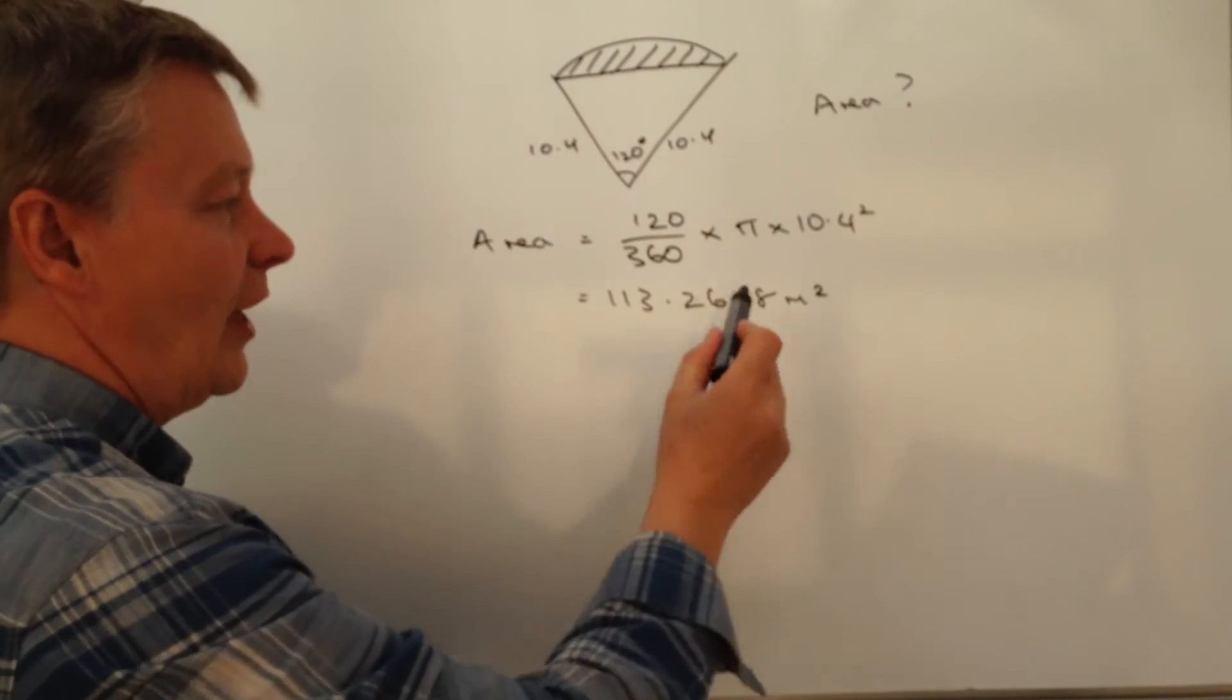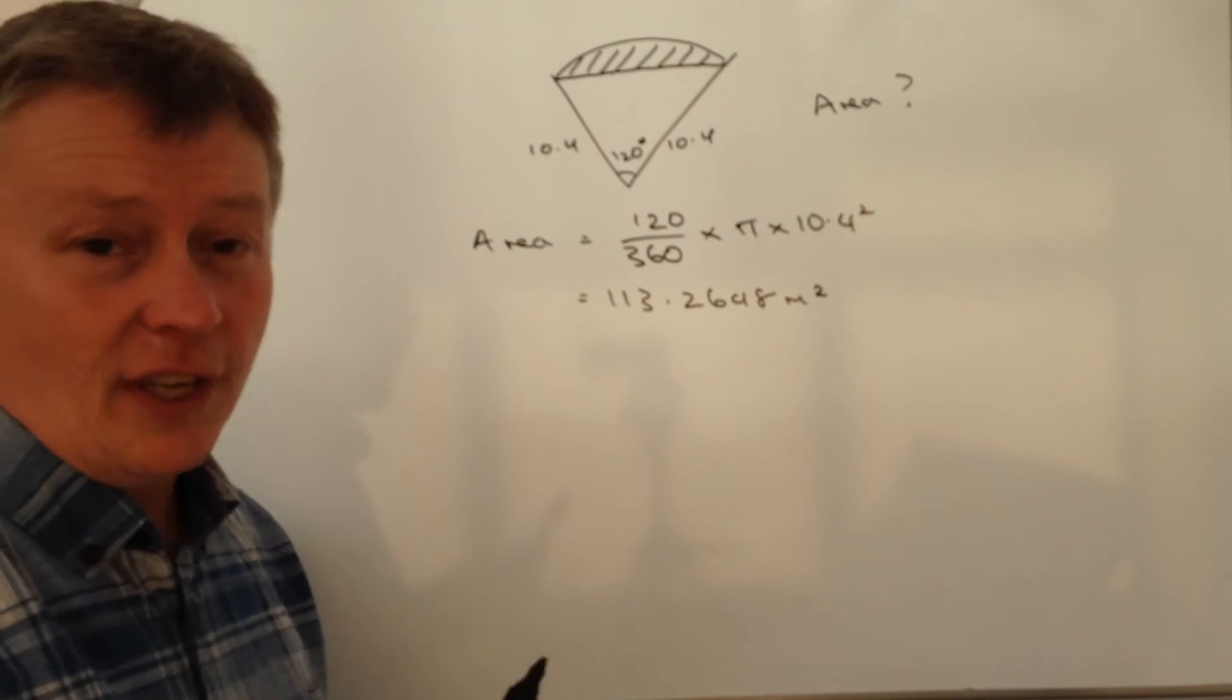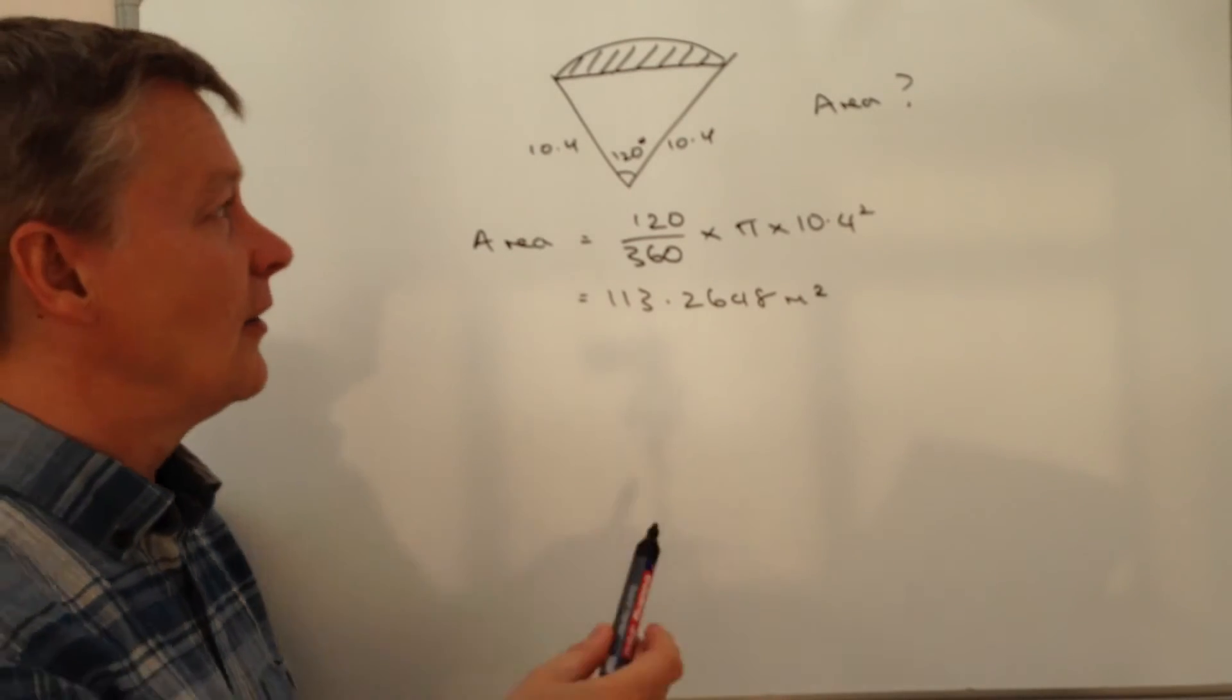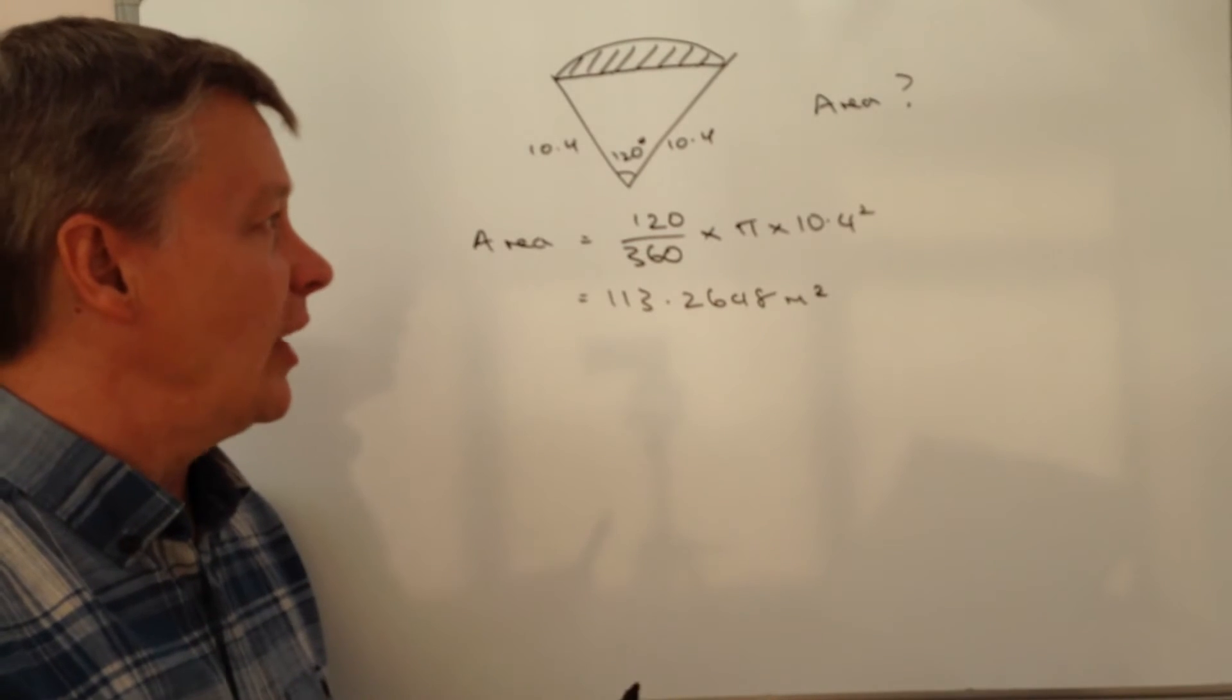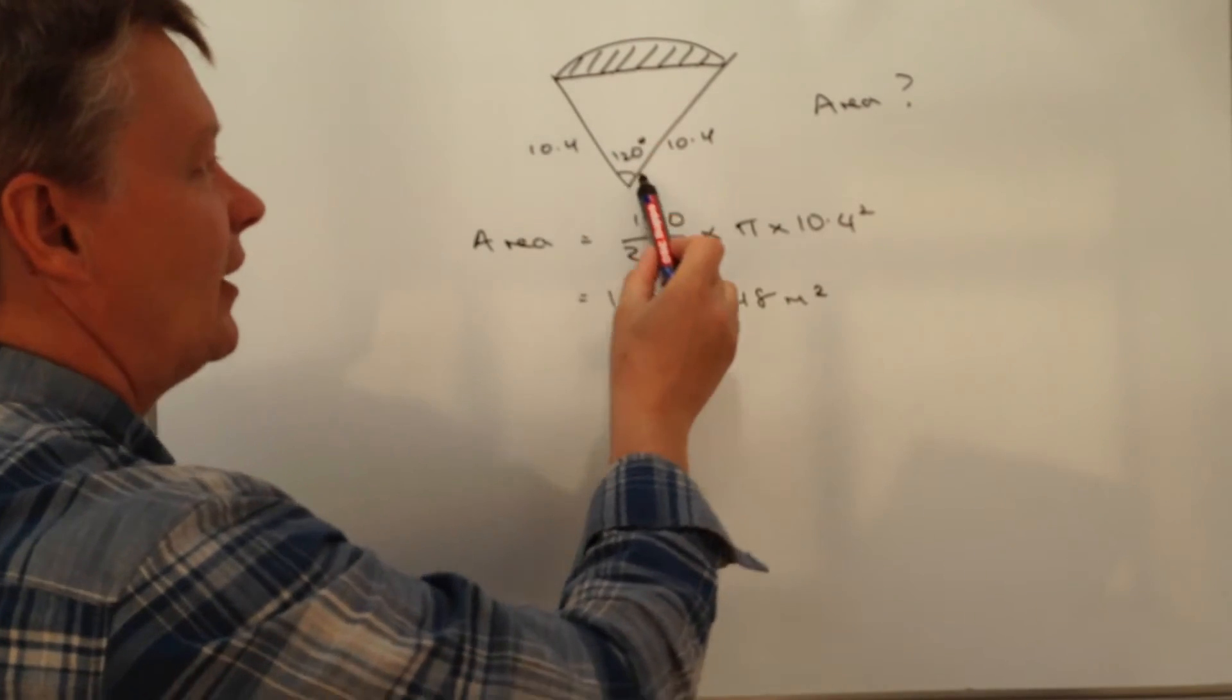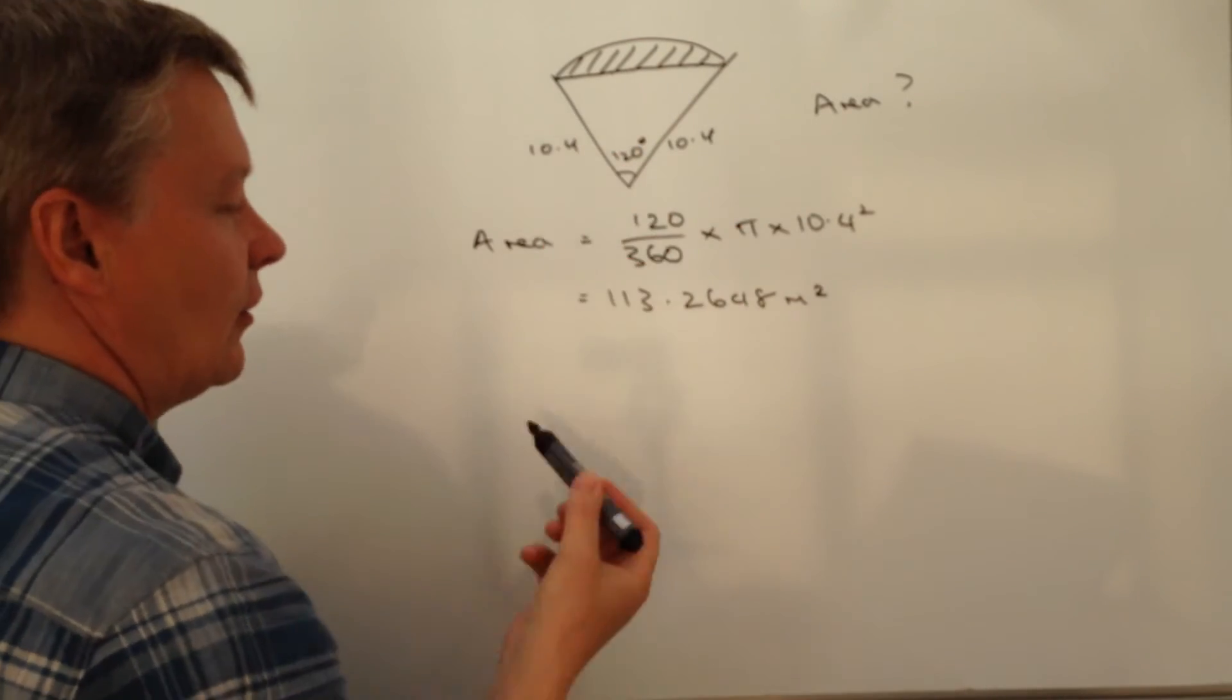Okay, well, we know the overall area of the sector is that. But the question now is, how do we then work out the area of just a little bit at the top? Okay, well, we can use this triangle here.